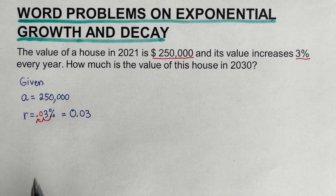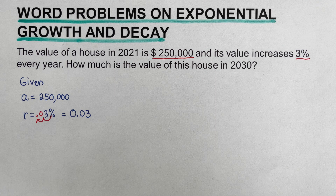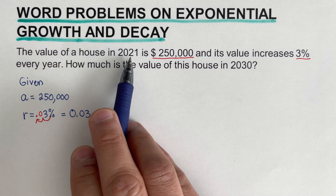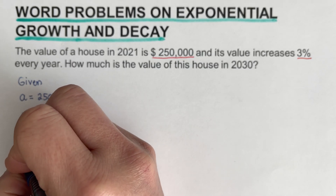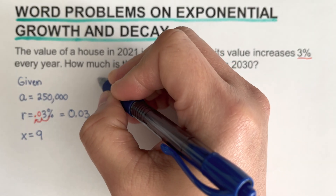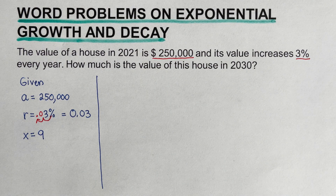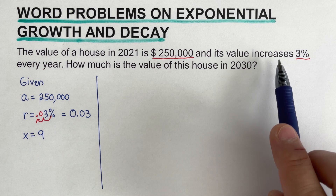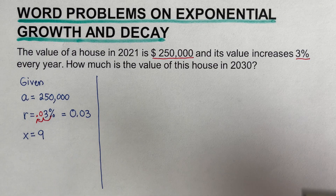You can also divide 3 by 100 to get the decimal version of 3%. Now we determine the number of time periods x, which is from 2021 to 2030. Subtracting 2030 minus 2021 gives us x equals nine. Just by looking at this word problem, it says the value increases, so this is an example of exponential growth.